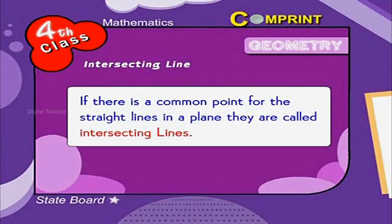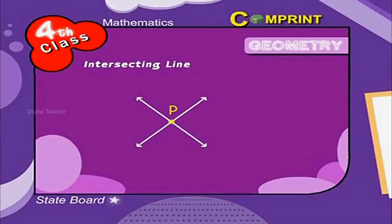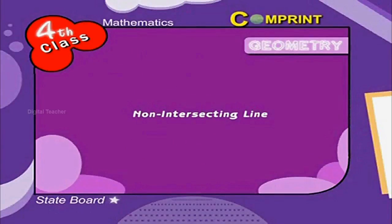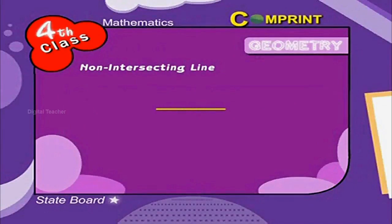Intersecting lines. If there is a common point for the straight lines in a plane, they are called intersecting lines. P is the point of intersection. Non-intersecting lines — if there is no common point for the lines in a plane, they are called non-intersecting lines or parallel lines. Look at the example.